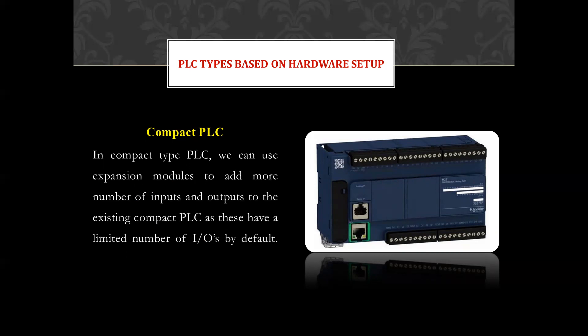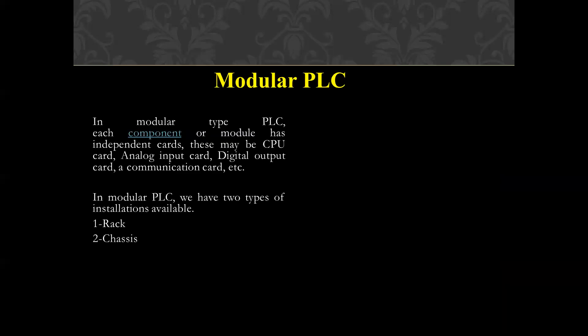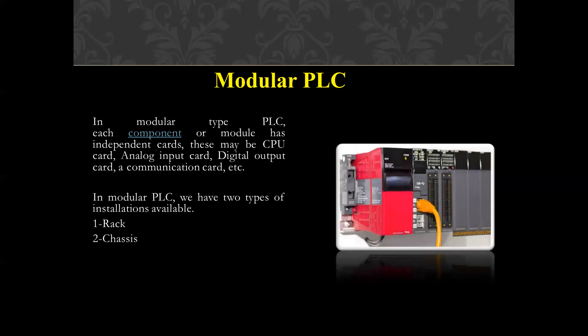Compact PLC has a limited number of I/O. In modular type PLC, it has independent cards. These might be a CPU card, analog input card, digital output card, or communication card. These cards can be easily inserted or removed from the running system.